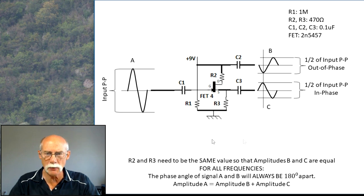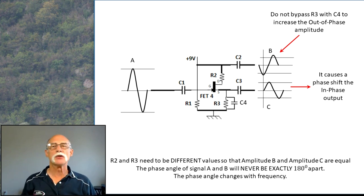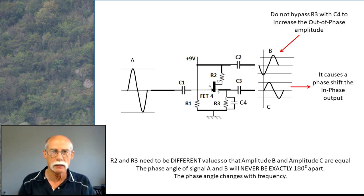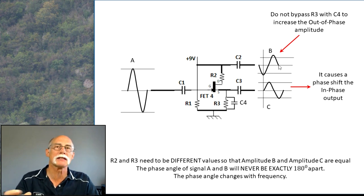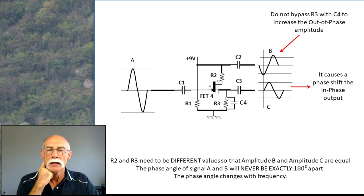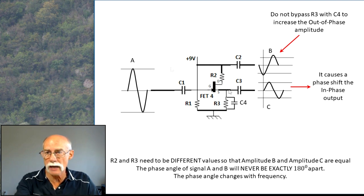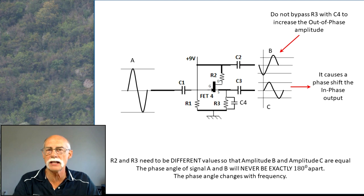This could be useful for a phase splitter in another application. When you bypass R3 with capacitor C4 — which needs to be electrolytic — you'll increase the amplitude of B, perhaps to match C or slightly more. But B will always be out of phase, and C will be out of phase with A. And all of a sudden, it's not a phase splitter anymore. A, B, and C are out of sync with one another — it's a different application at that point.